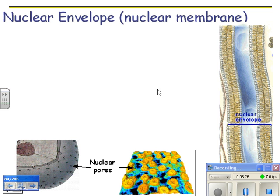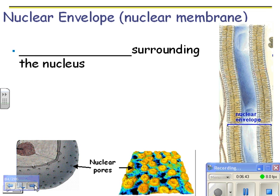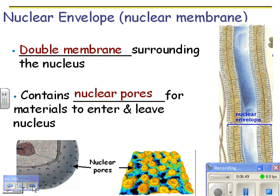The nuclear envelope is actually two lipid bilayers — so four lipid layers total. Here's one lipid bilayer and here's another, giving you a double membrane surrounding the nucleus — that's the nuclear envelope. It contains nuclear pores, which you can see in these images. The nuclear pores allow materials to enter and leave the nucleus, and the membrane only lets certain things through.